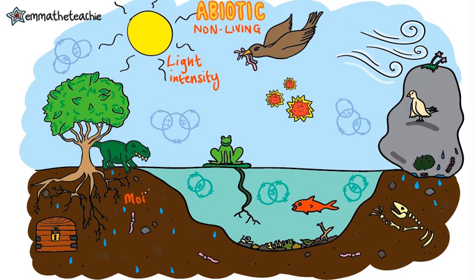Next is moisture levels. These are really important for all organisms as all life needs water to survive. The desert is really dry as it doesn't rain very often, so there are much fewer organisms living there. Some insects, like slugs for example, need really moist environments too.